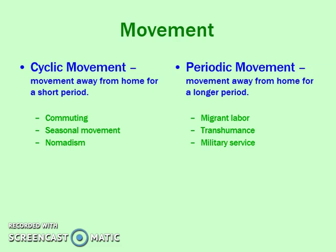For periodic movement, that's a little bit longer — you're away from your home longer than you are at home. So if you go away to college for nine months and then come home for the summer, that's periodic movement. If you are in military service, oftentimes you're deployed for two or three years and then home for three or four months. Migrant labor is also typically periodic because you're gone for a couple years and then you send home remittances, and then you go home perhaps after that.